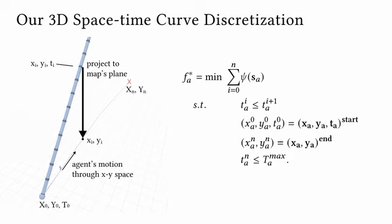A key difference between us and other space-time optimization methods is that for us, over the trajectory, both position and time is a variable.